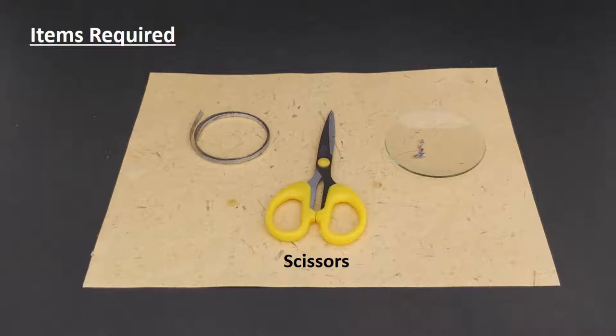Additionally, we will require a pair of scissors to cut the magnesium ribbon into small pieces.